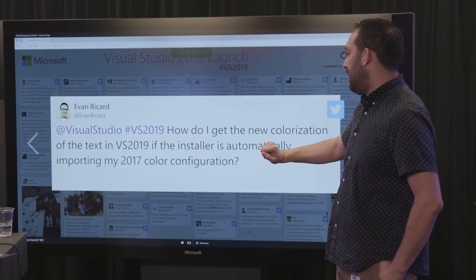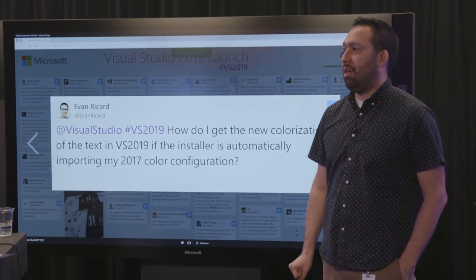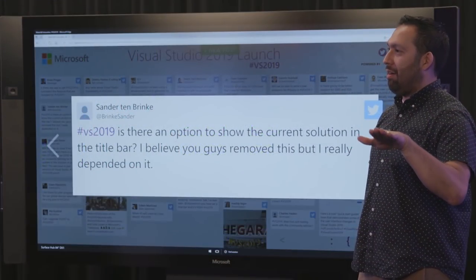From Evan: how do I get the new colorization of the text in VS 2019 if the installer is automatically importing my 2017 color configuration? I'll answer it two ways. First, I spoke earlier about the theming updates in Visual Studio 2019 — if you're using the default light theme, you'll automatically get it, but you can always go back and reset your settings for the theme and set it to the default light theme to get those new color options. That doesn't necessarily impact your text editor options, because if you have your own custom settings for what you want your editor to look like, that will override our default theming. For that, you'd have to go into Tools > Options and basically reset.